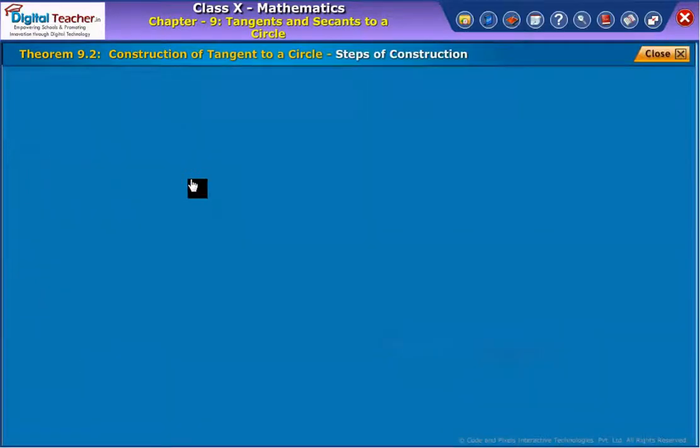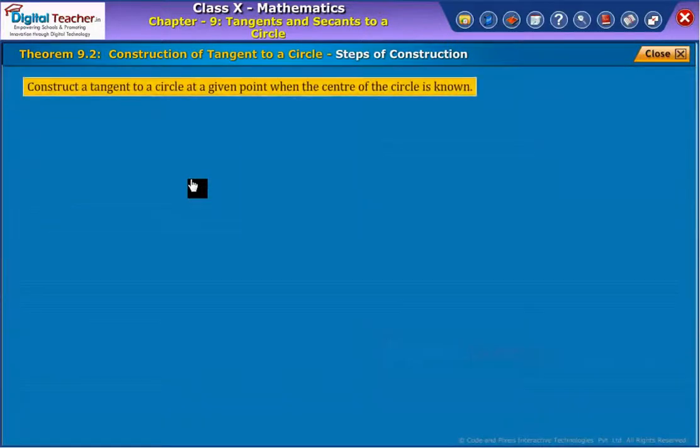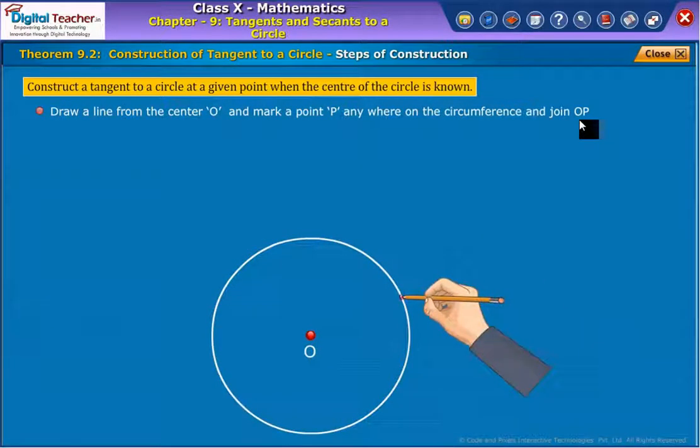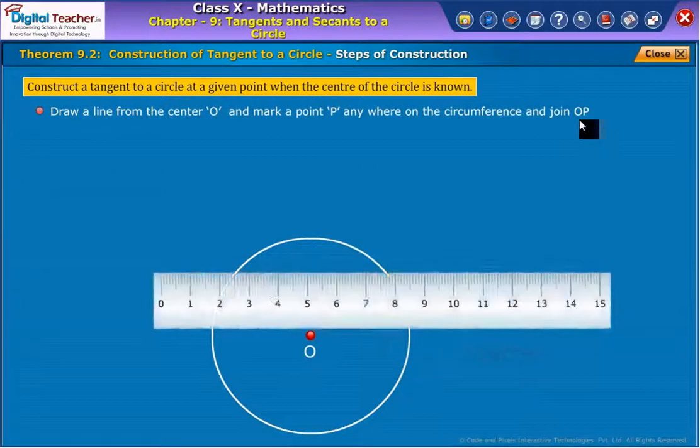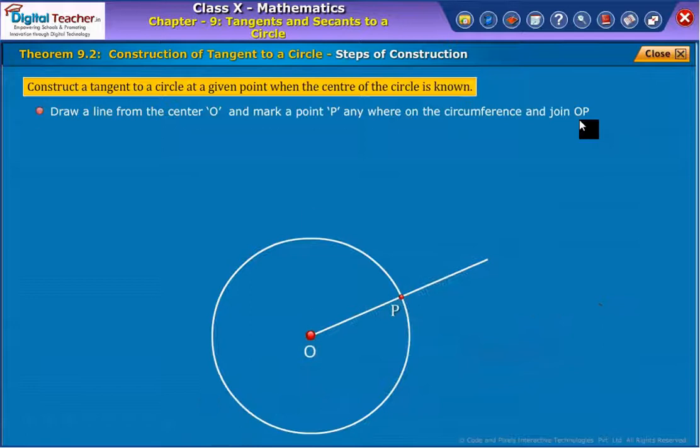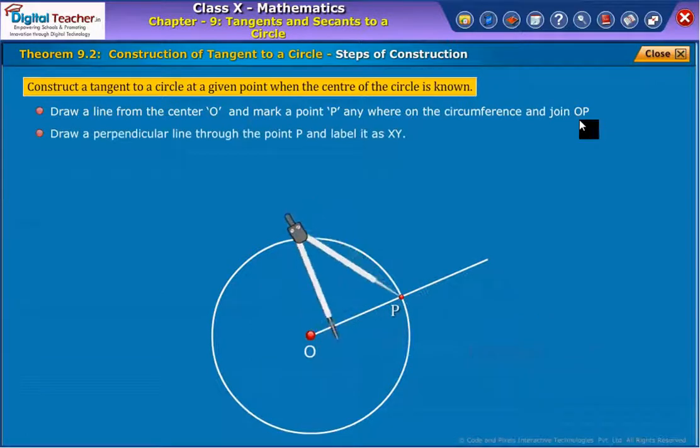Before following the steps, observe the construction concept: construct a tangent to a circle at the given point when the center of the circle is known. Now follow the steps of construction. Draw a line from the center O and mark a point P anywhere on the circumference and join OP. Draw a perpendicular line through the point P and label it as XY.